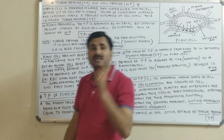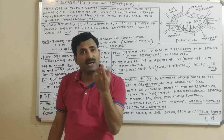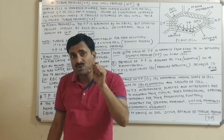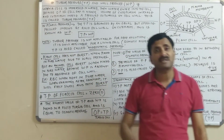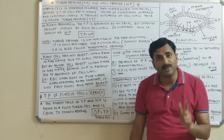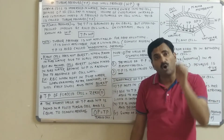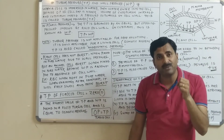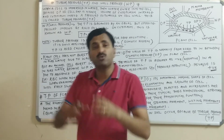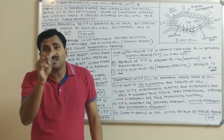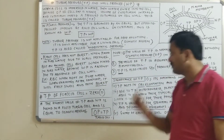For example, take the RBC (red blood cell), which is an animal cell. This question is commonly asked in medical examinations: what happens when RBC is kept in distilled water? Since distilled water is 100% pure water, water enters the RBC, turgor pressure develops, and due to the regular increase in TP — with no cell wall present — the RBC swells and bursts.